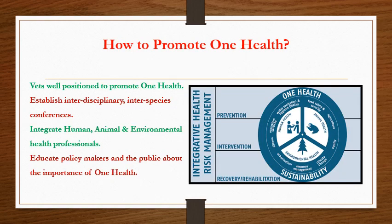How to promote One Health? It needs a multidisciplinary approach. Veterinary health professionals are most suitable to connect with One Health. There should be better establishment of interdisciplinary, inter-species conferences. We need to integrate human, animal and environmental health professionals, and educate policy makers, politicians and the public about the importance of One Health. There should be prevention, intervention and recovery rehabilitation — that is the multidisciplinary approach for promoting One Health.